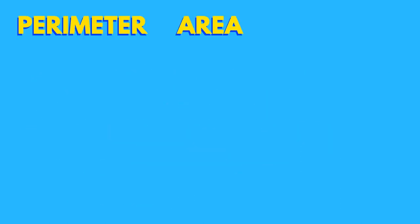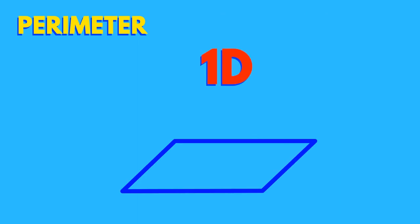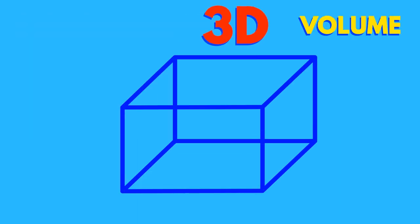The concepts of perimeter, area and volume relate to every shape imaginable. Perimeter is a 1D concept, area is 2D and volume exists in 3D.